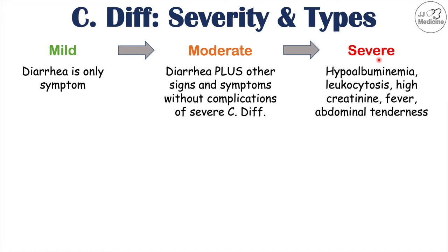In severe C. difficile infection, we have hypoalbuminemia, leukocytosis with very high white blood cell count, high creatinine due to dehydration and potential pre-renal AKI, a fever greater than 38.5 degrees Celsius, and abdominal tenderness. In fulminant C. diff colitis, we can see abdominal distension and possible complications like colonic perforation.